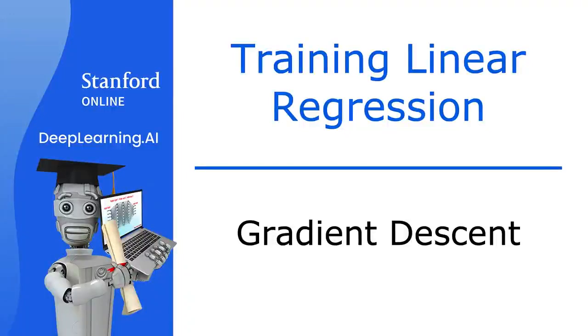Welcome back. In the last video, we saw visualizations of the cost function J and how you can try different choices of the parameters w and b and see what cost value that gets you.